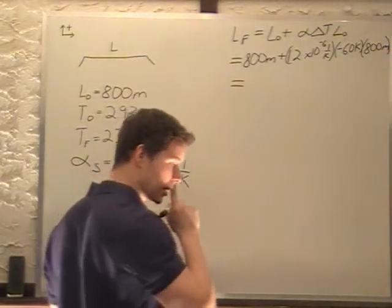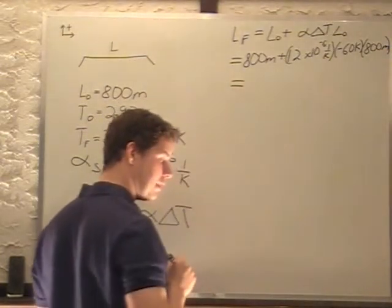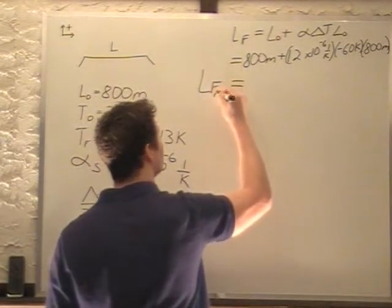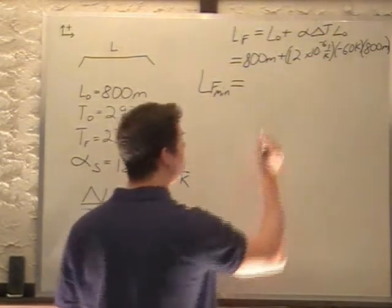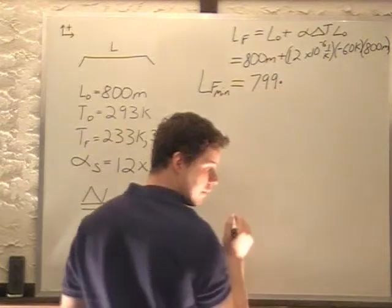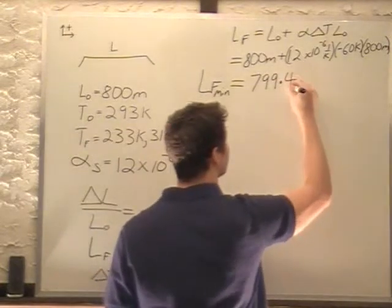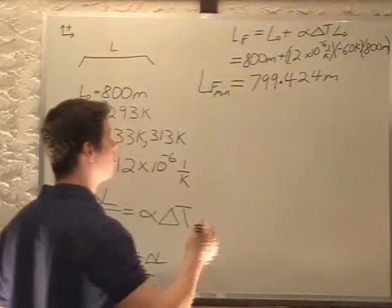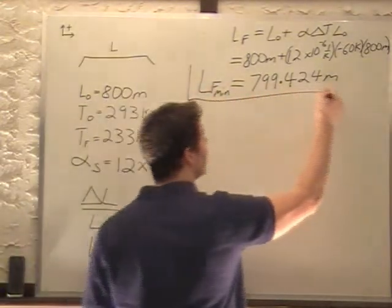So if we plug all that into our calculator, we get a distance. Our L final minimum is 799.424 meters. I asked to put this to three decimal places, so that's our final answer for the minimum.